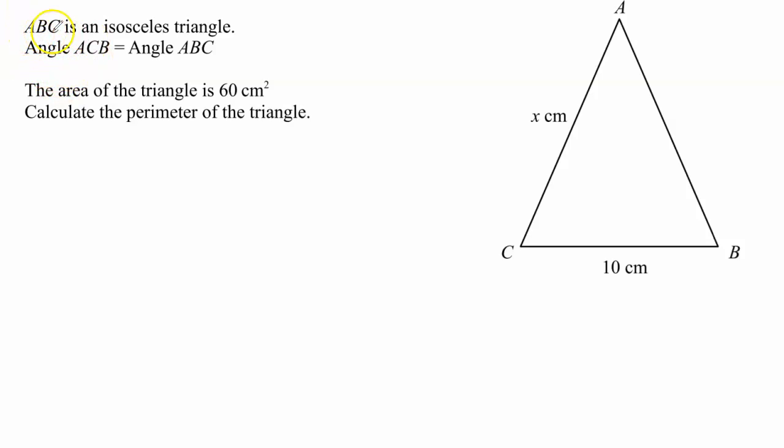Let's solve this problem. ABC is an isosceles triangle. Angle ACB equals angle ABC. The area of the triangle is 60 cm squared. Calculate the perimeter of the triangle. Here is the triangle. We are told that the triangle is isosceles, and of course an isosceles triangle is one that has two sides equal and the base angles being equal.